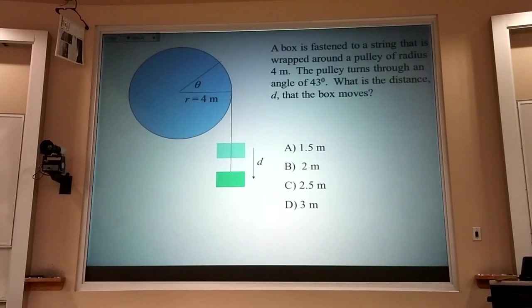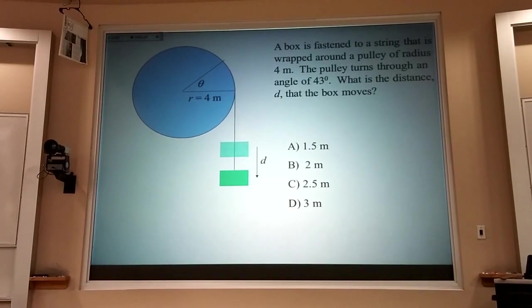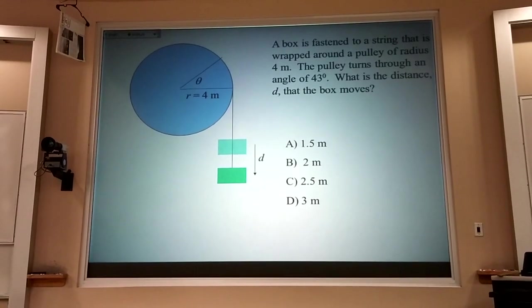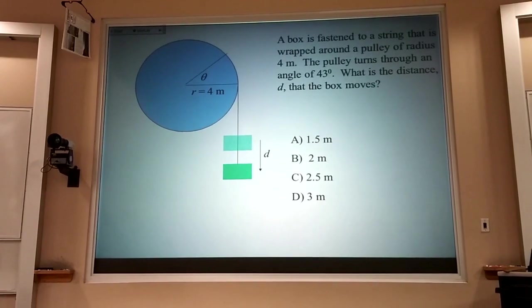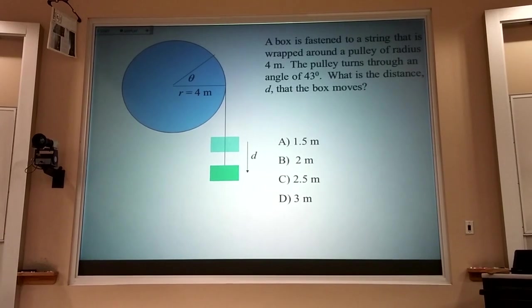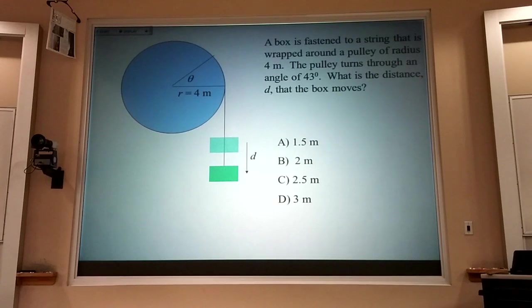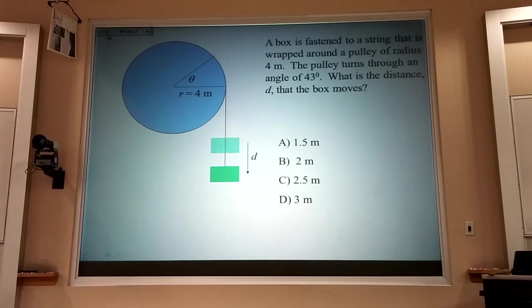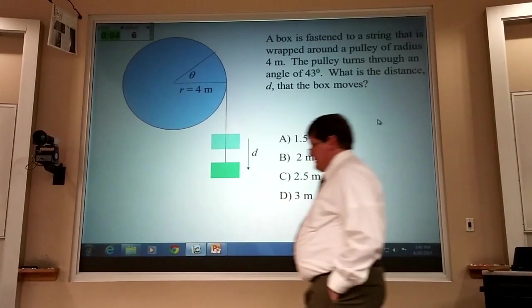Now, this is the type of question you'll need to answer on the final exam. A box is fastened to a string that is wrapped around a pulley. The pulley has a radius of four meters. The pulley turns through an angle of 43 degrees during which it is dropping the block, the box. So, how far does the box drop as the wheel turns by 43 degrees? So, with your clicker, tell me what you get. Work it out with your neighbor and then use your clicker.